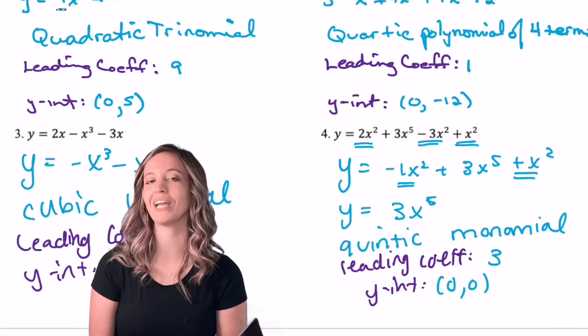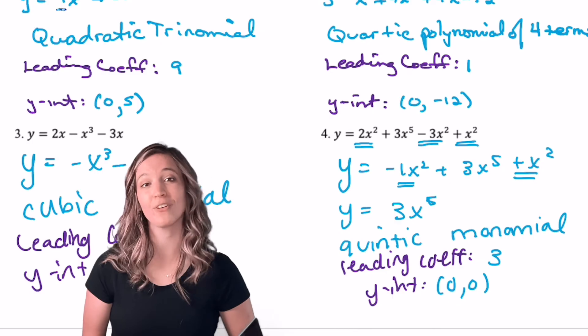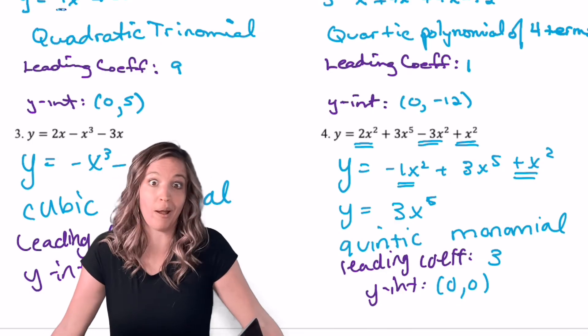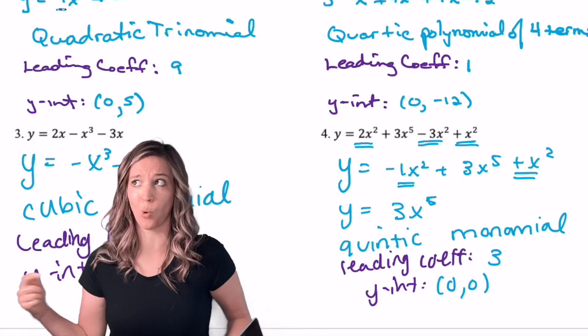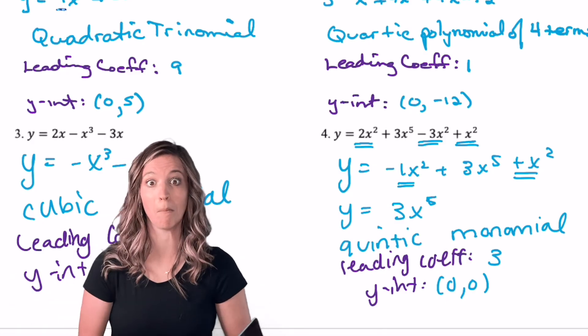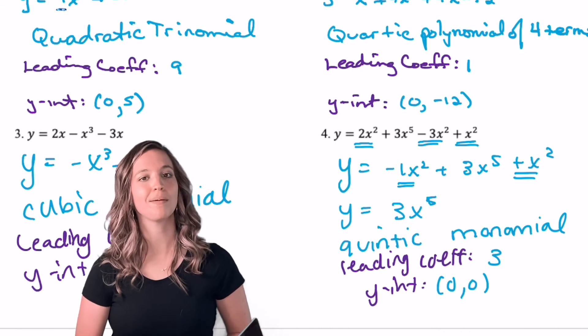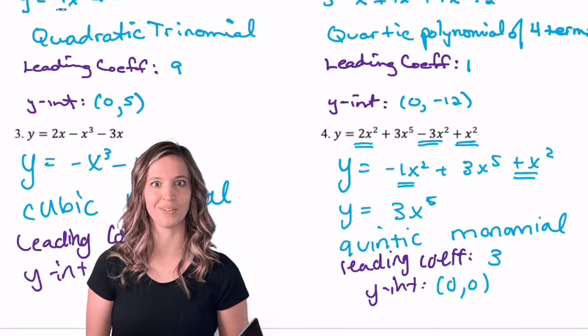Number four, I got y equals 3x to the fifth. Be careful here - when I added my x squared terms together, they ended up canceling out. So I just got y equals 3x to the fifth. That's a quintic. There's only one term, so it's a monomial. Quintic monomial. Leading coefficient is 3 and the y-intercept is (0, 0). So it's an x-intercept again.